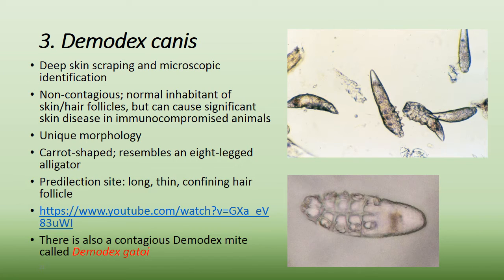Demodex requires a deep skin scraping — you scrape until you actually see bleeding — and then examine it under the microscope. Demodex mites are non-contagious and are normal inhabitants of the skin and hair follicles; pretty much all dogs have them. However, if the animal becomes immunocompromised, these mites can overpopulate and cause significant skin disease. They have a very unique carrot-shaped morphology resembling an eight-legged alligator. There is also a contagious Demodex mite called Demodex gatoi.